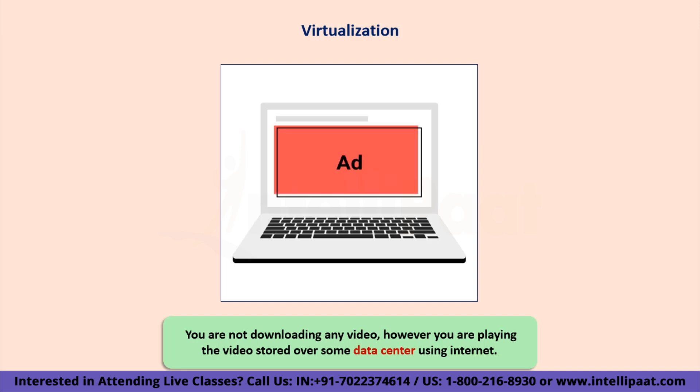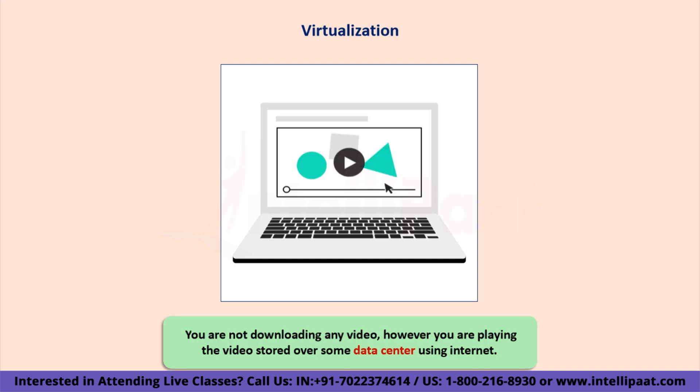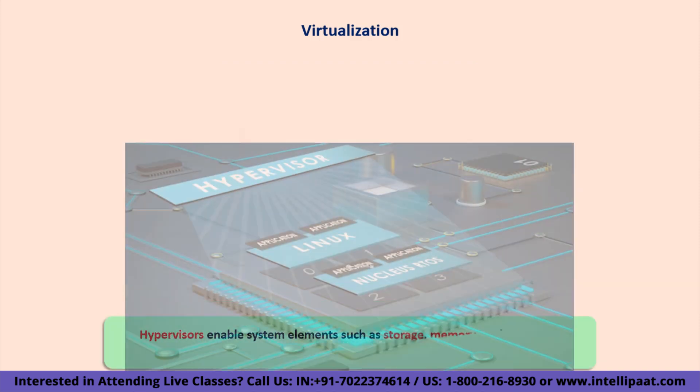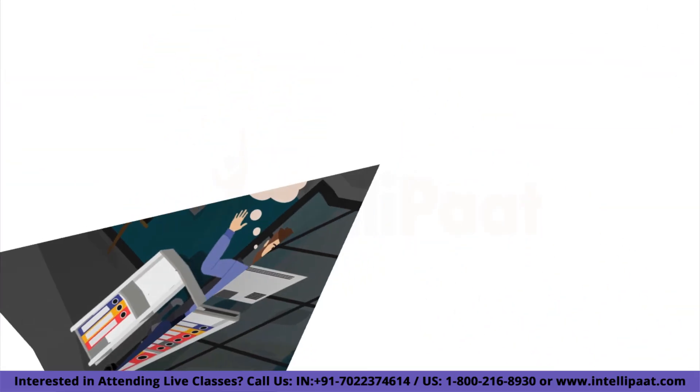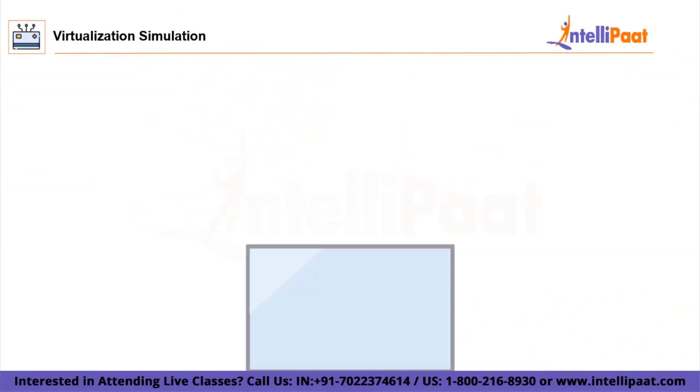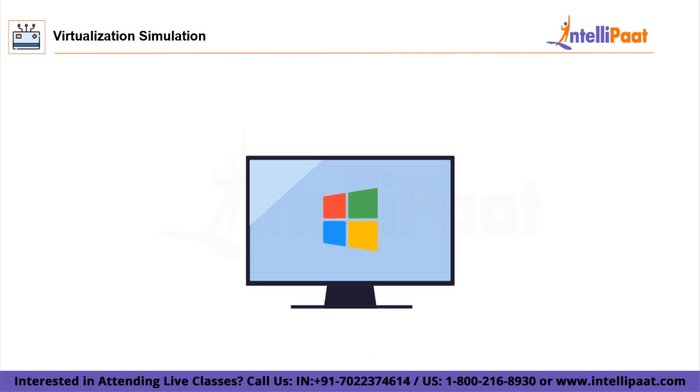This will enable convenience, less costing, and optimal resource utilization. The software that makes virtualization possible is known as a hypervisor. Hypervisors allow elements of the system such as storage, memory, processor, etc. to be distributed among multiple separate and secure virtually built components — we call them virtual machines or VMs. To understand this theory in detail, let me show you a sample simulation of virtualization.